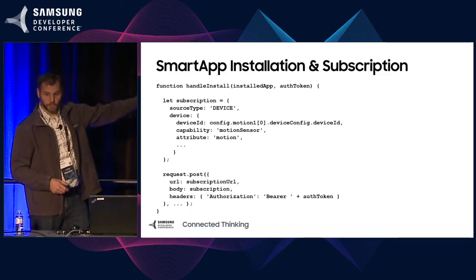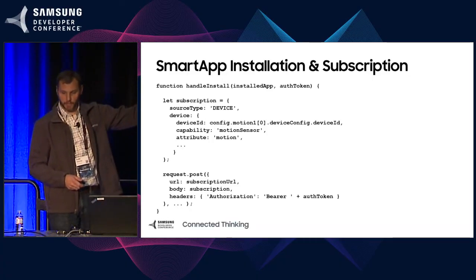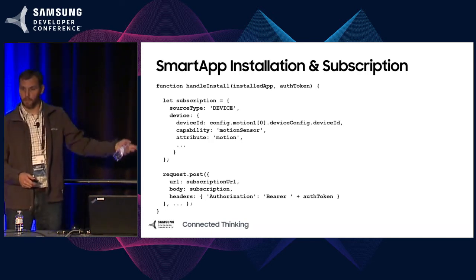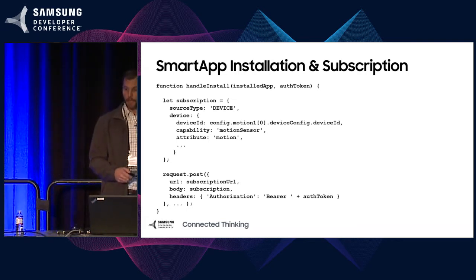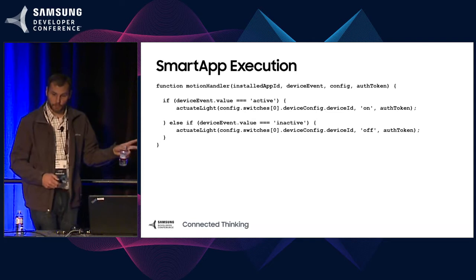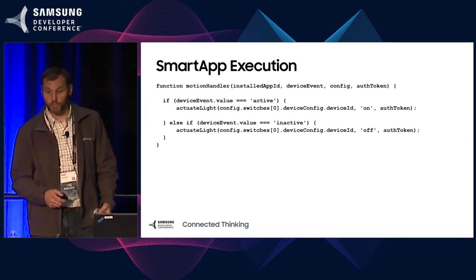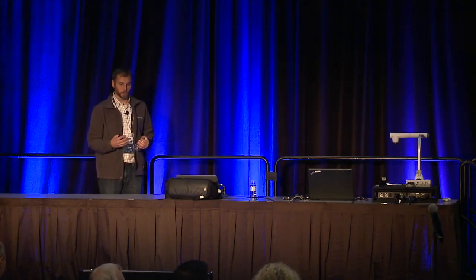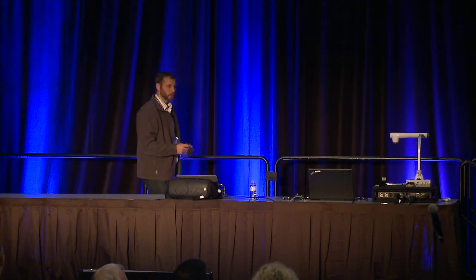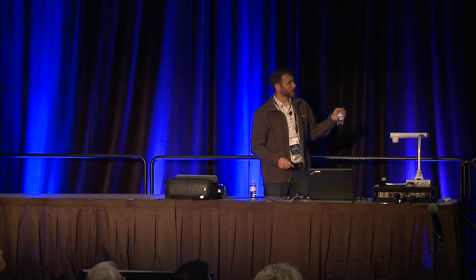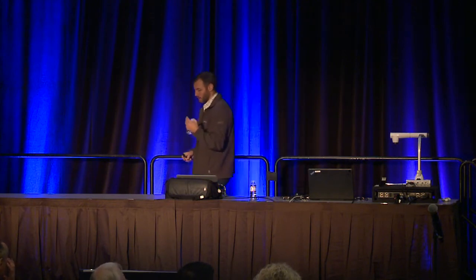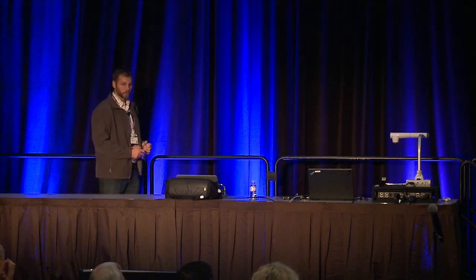After building up the subscription JSON with device ID, capability, and attribute, we do an HTTP POST with that JSON as the body. After installation, we get into execution. In our method dispatch, when an event comes in we send it to the motion handler function. Here we inspect the event and take action: when the motion event indicates active, we actuate the light and turn it on; else if it's inactive — meaning the motion detector has stopped sensing motion — we turn the light off.